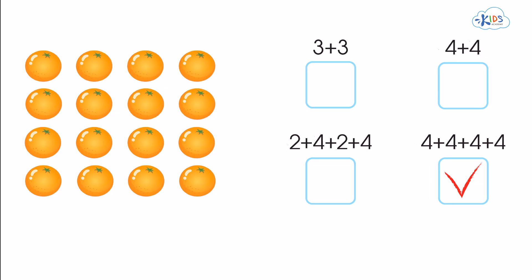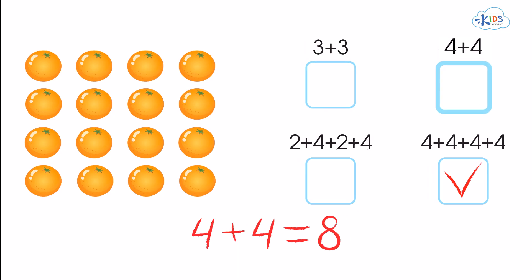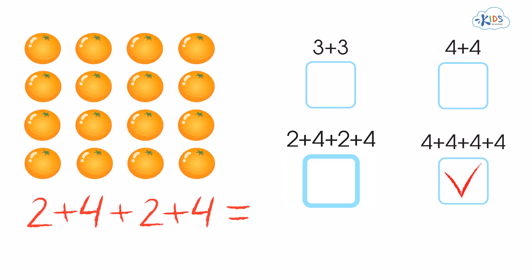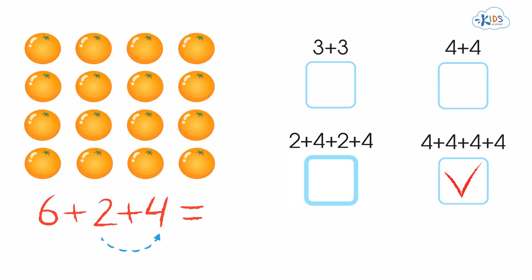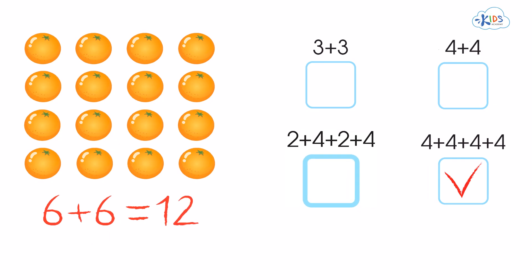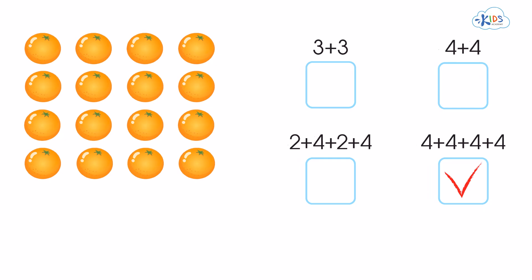We can quickly check the other equations to see if they're a good representation of 16 by simply adding them together. Three plus three equals 6, so that's wrong. Four plus four equals 8, so that's wrong too. Let's try 2 plus 4 plus 2 plus 4 — adding the first two numbers: 2 plus 4 equals 6, and 2 plus 4 again equals 6. So we're left with 6 plus 6, but it does not equal 16 — it equals 12. So 2 plus 4 plus 2 plus 4 is not a good representation of this picture or of the number 16. Thanks for watching.